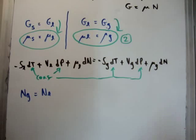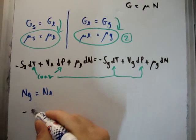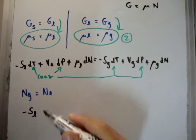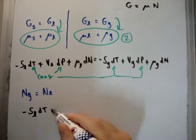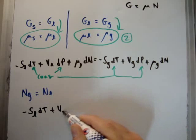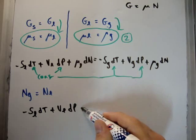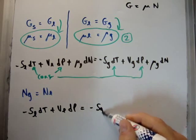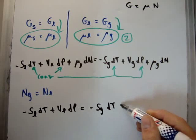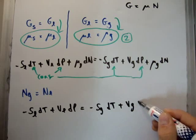So for that reason we can rewrite this as minus the entropy of the liquid dT plus V of L dP equals minus S of G dT plus V of G dP.